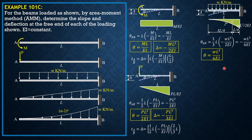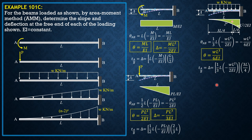For the deflection, the deviation of A relative to the tangent at B is the moment of area with respect to A. So it equals one-third of L times negative WL²/2EI, times the moment arm which is three-fourths of L. Canceling the 3 gives delta = -WL⁴/8EI.